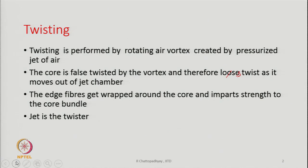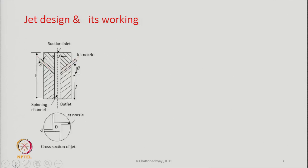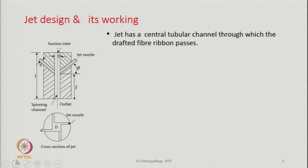In this spinning system, the jet is the twisting element — that is the twister. We should know more about how the jet works, what its construction is, and how it functions. Here is a constructional view of the jet used in the spinning machine. These are the jet nozzles — we are showing only one single jet, though in the actual machine there will be two jets placed one after the other.